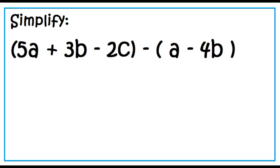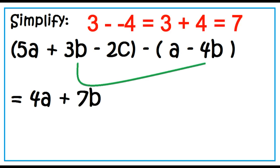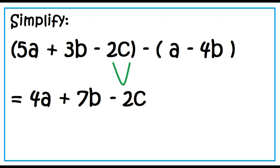Simplify: the quantity 5a plus 3b minus 2c, minus the quantity a minus 4b. 5a minus a is 4a; 3b minus negative 4b is 7b. Since 2c has no similar term, just copy 2c. The answer is 4a plus 7b minus 2c.